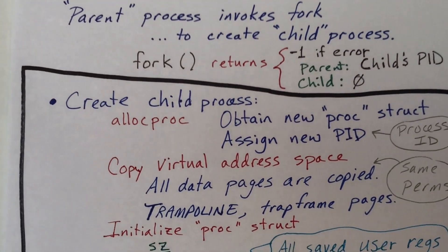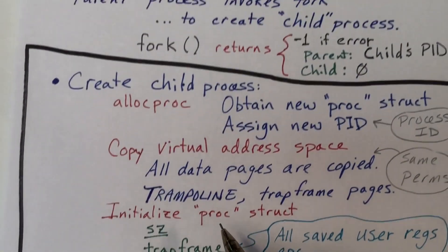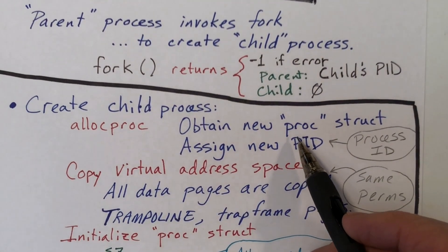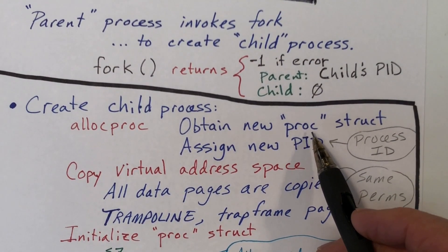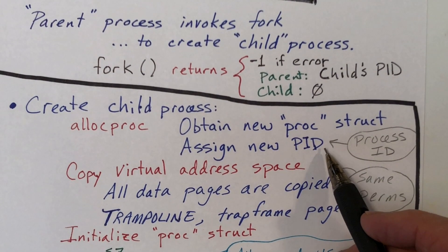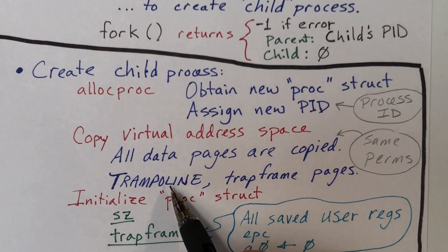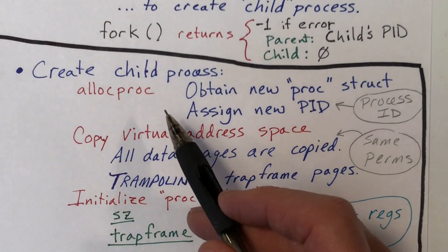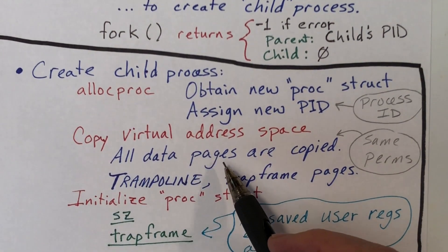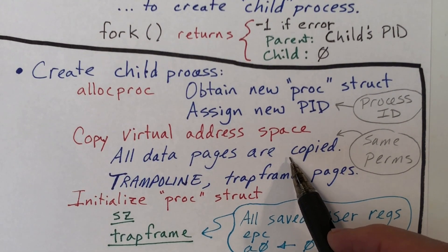So, what's involved in creating the child process? We do several things, and then we return the process ID of the child. The first thing we do is call the alloc proc function. This will search for an unused proc structure, grab it, and begin the initialization process. It starts by assigning a new process ID to that proc structure. It also creates an empty address space and adds mappings for the trampoline and trap frame pages. Then, after alloc proc returns, we need to copy the virtual address space, so every data page from the parent process is copied and added to the child's virtual address space.